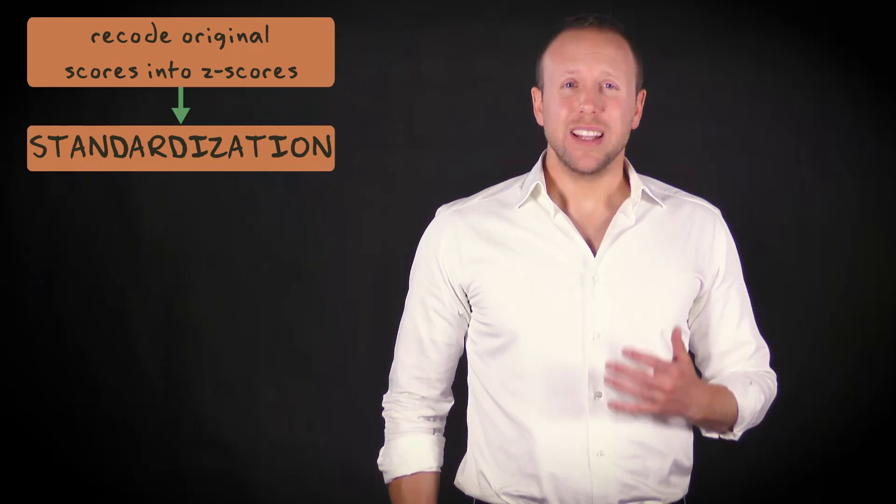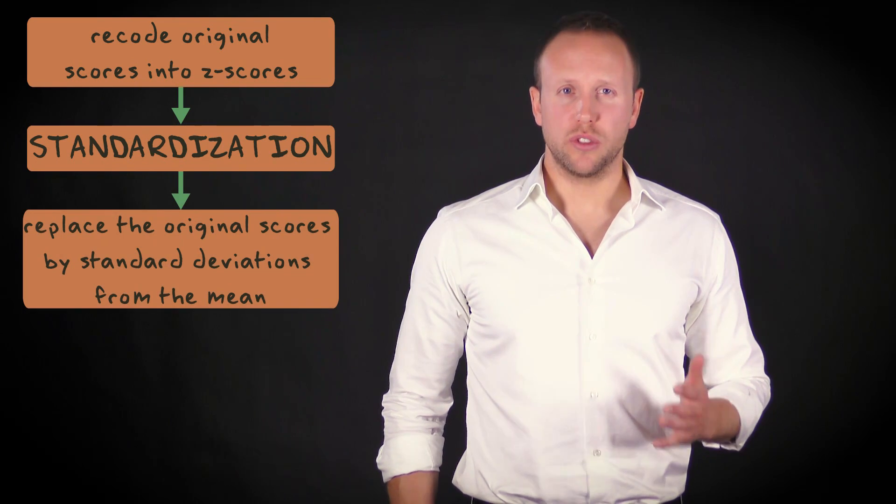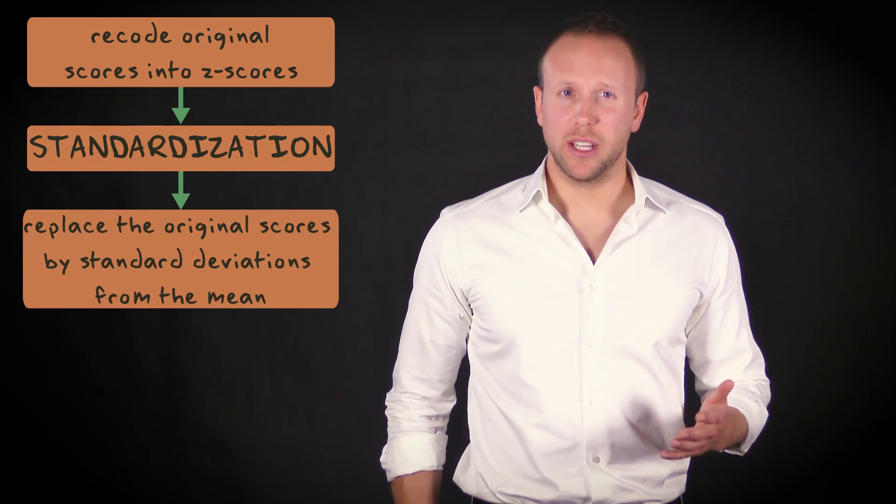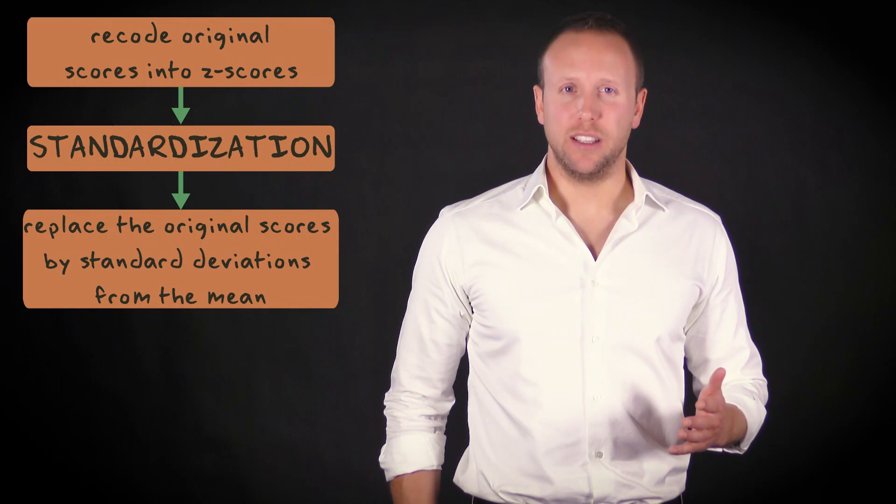If we recode original scores into z-scores, we say that we standardize a variable. Standardization means that we replace the scores measured in the original metric by scores expressed in standard deviations from the mean.